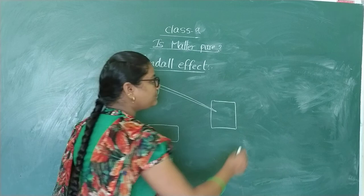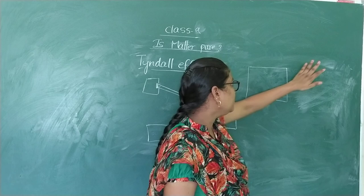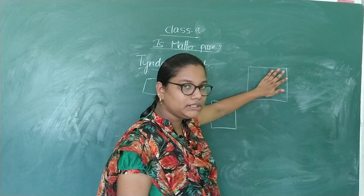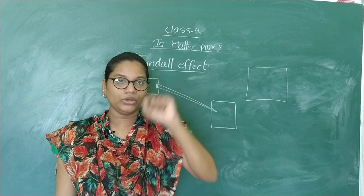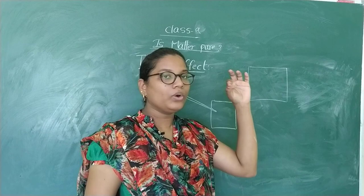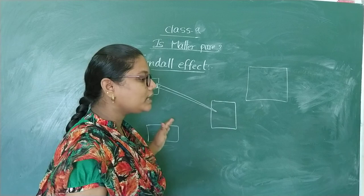In our daily life, for example, consider one room. We will assume this is a room. In this room, some sunlight enters. When we see the sunlight, we will see the path of the dust particles in the sunlight. There is a tiny hole in this room, and light enters through it. We will see the path of the light and the dust particles there. That is known as the Tyndall effect.